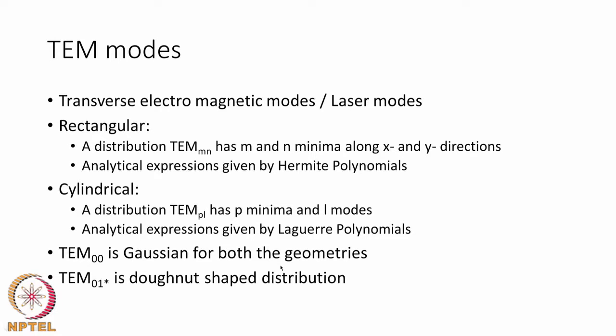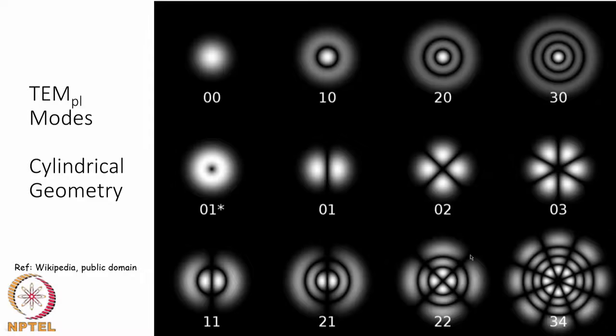TEM 00 is the most common heat source description and is basically the same as Gaussian — for arc welding, Gaussian is the most popular, and for lasers, TEM 00 is the mode used for cutting and welding. TEM 01 is popular for surfacing applications and is a donut-shaped distribution. There are other modes that may not be popular for welding applications, but they will be shown for curiosity.